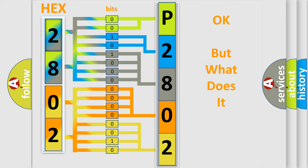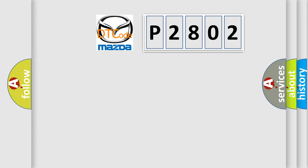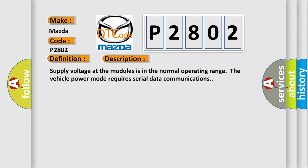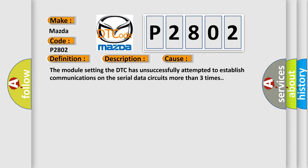The number itself does not make sense to us if we cannot assign information about what it actually expresses. So, what does the diagnostic trouble code P2802 interpret specifically for Mazda car manufacturers? The basic definition is AQHS bus off. Supply voltage at the modules is in the normal operating range, and the vehicle power mode requires serial data communications. This diagnostic error occurs most often when the module setting the DTC has unsuccessfully attempted to establish communications on the serial data circuits more than three times.